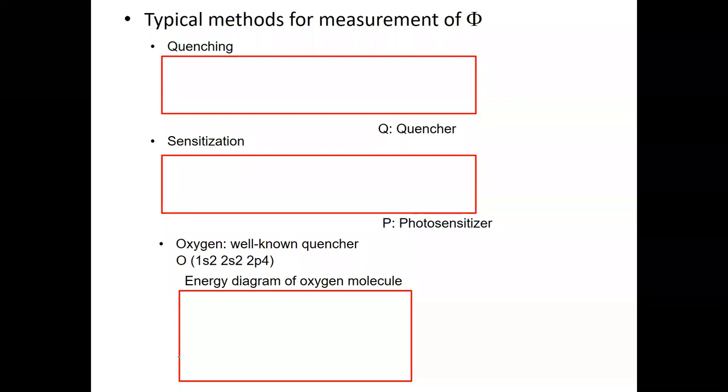In the quenching process, we have a M1 molecule which is excited, and it is M1 star, and changes into a product species. However, by adding the quencher here, this one quenches the molecule to the ground state by receiving the energy from the M1 excited state. In this case, Q is called quencher.